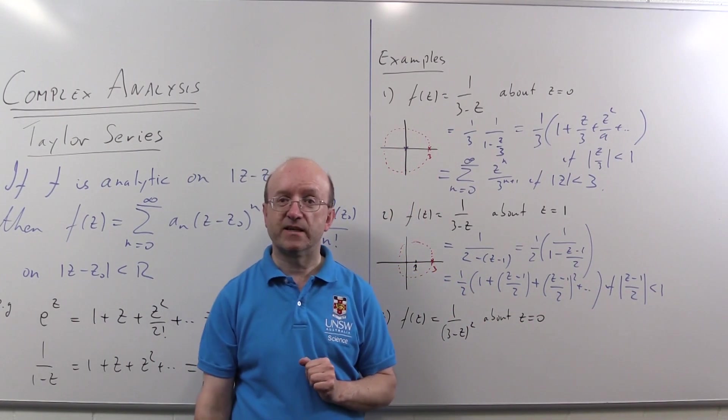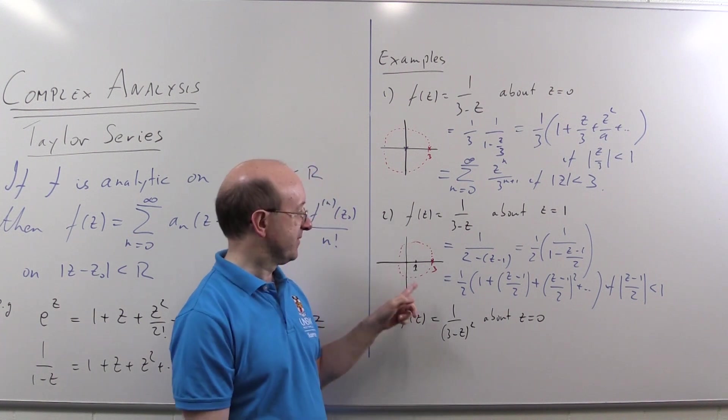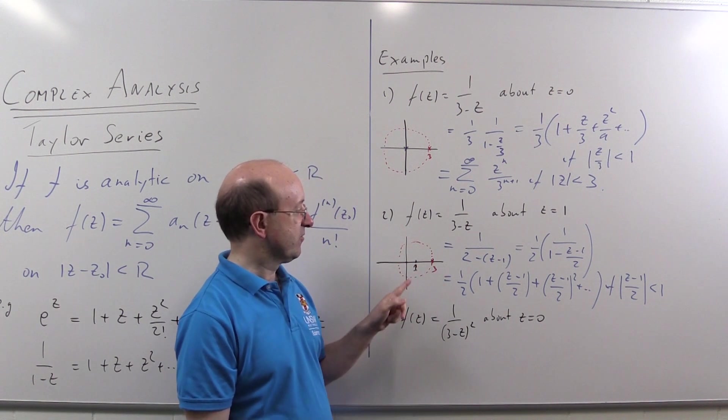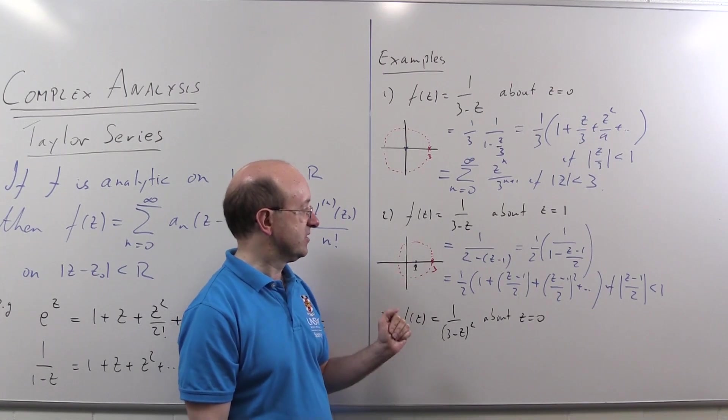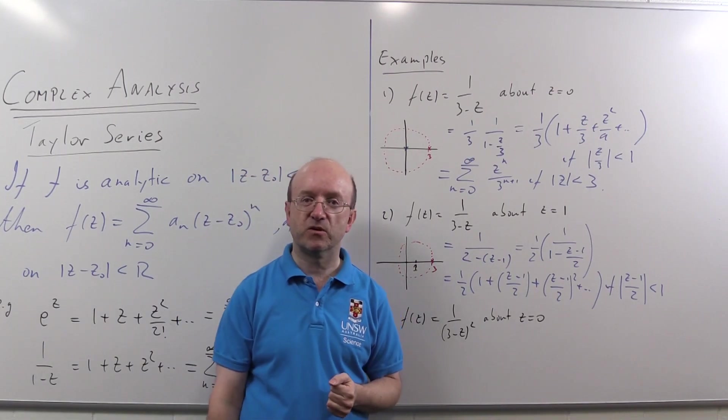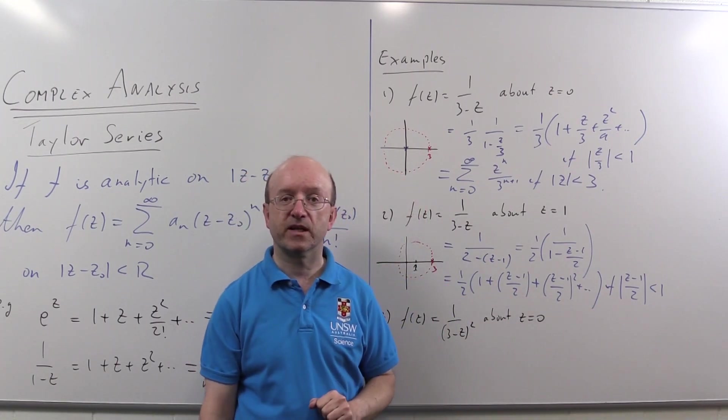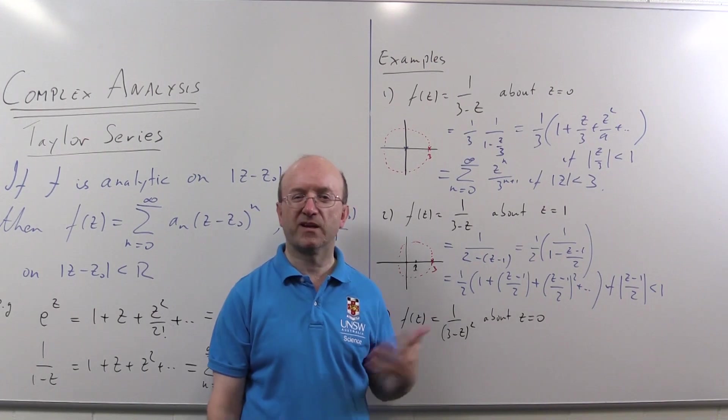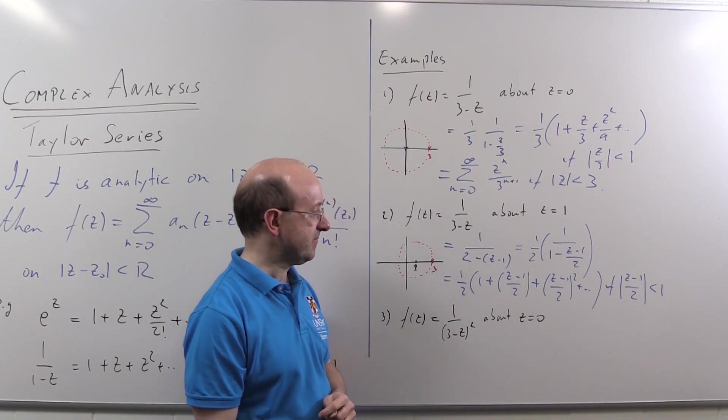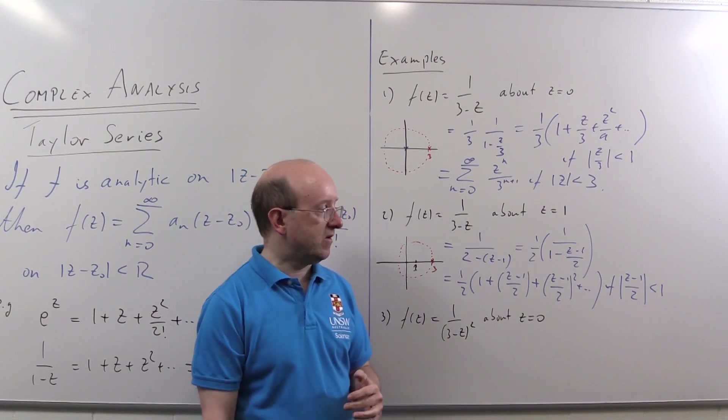But in fact that's what my little diagram told me before I even began. Here I've drawn a little circle centered at one, going through three. My function is analytic in mod z minus one strictly less than two. And that is what has come out of the calculation. I could rewrite this in terms of sigmas, but I won't in this one case.